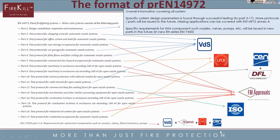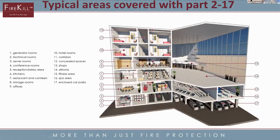It's also important to say that this standard has been worked on for 20 plus years. VDS, FM, LPCB, SIN, and ISO are all represented here. Typical areas covered through parts 2 to 17 include atriums, hotel rooms, server rooms, offices, car parks, etc. Each protocol can be used for each application, and due to its application-based nature, you will use different systems all the way through the install.